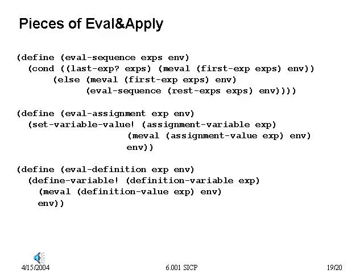Expressions like definition and assignment simply either create or change bindings of variables and values in the environment. In both cases, we get out the part of the expression that corresponds to the new value and actually evaluate it by recursively applying eval to that. We similarly get out just the part that corresponds to the variable as a tree structure — grabbing that piece without evaluation — and then do something in the environment. By using data abstractions here, we have not specified what order the expressions will be in; a change in order will not change how these evaluations take place.